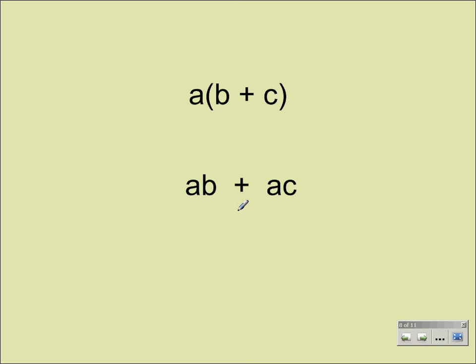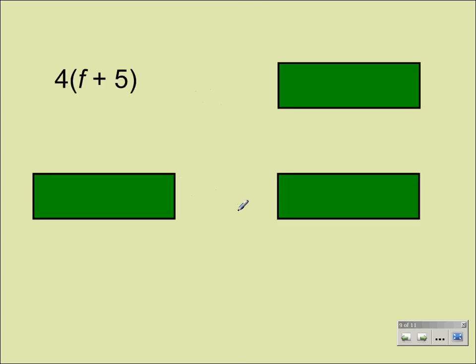Now, there it is in theory. Let's try it with some numbers. First, let's have 4 times the quantity of F plus 5. Well, we would give the 4 to the F, and also give the 4 to the 5. So basically, what we're doing is saying we're going to multiply 4 times F, and then we're going to add 4 times 5.